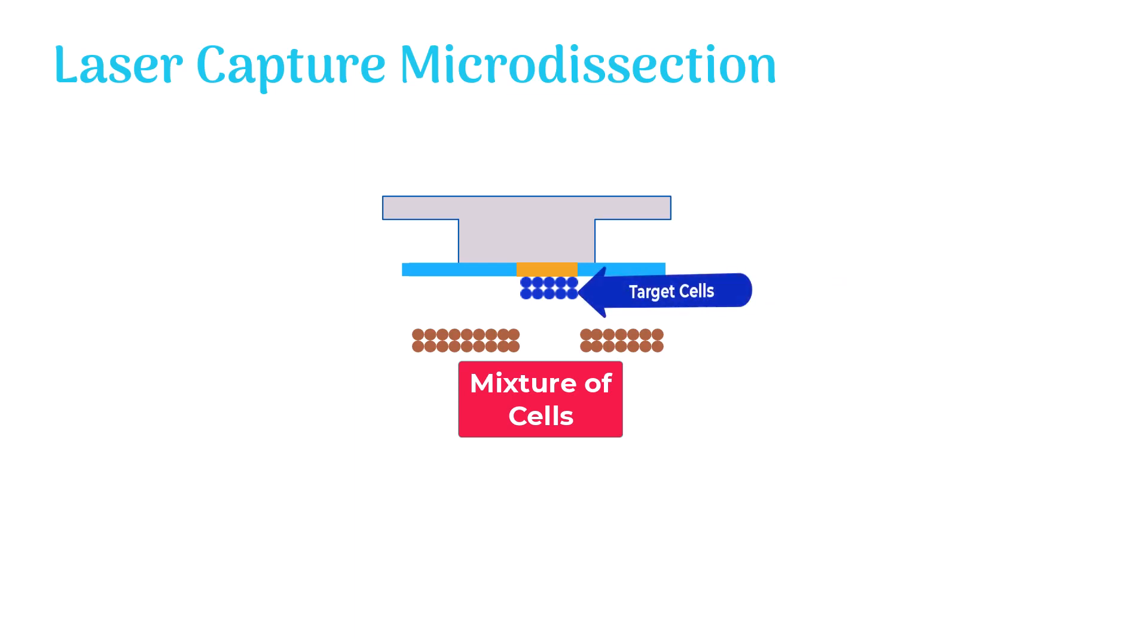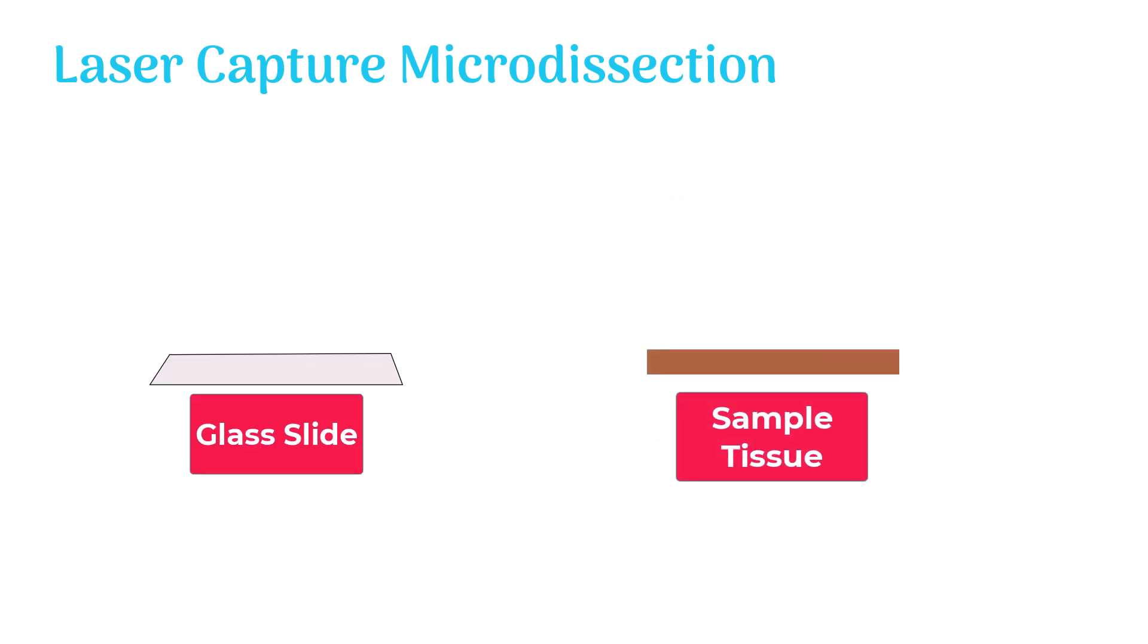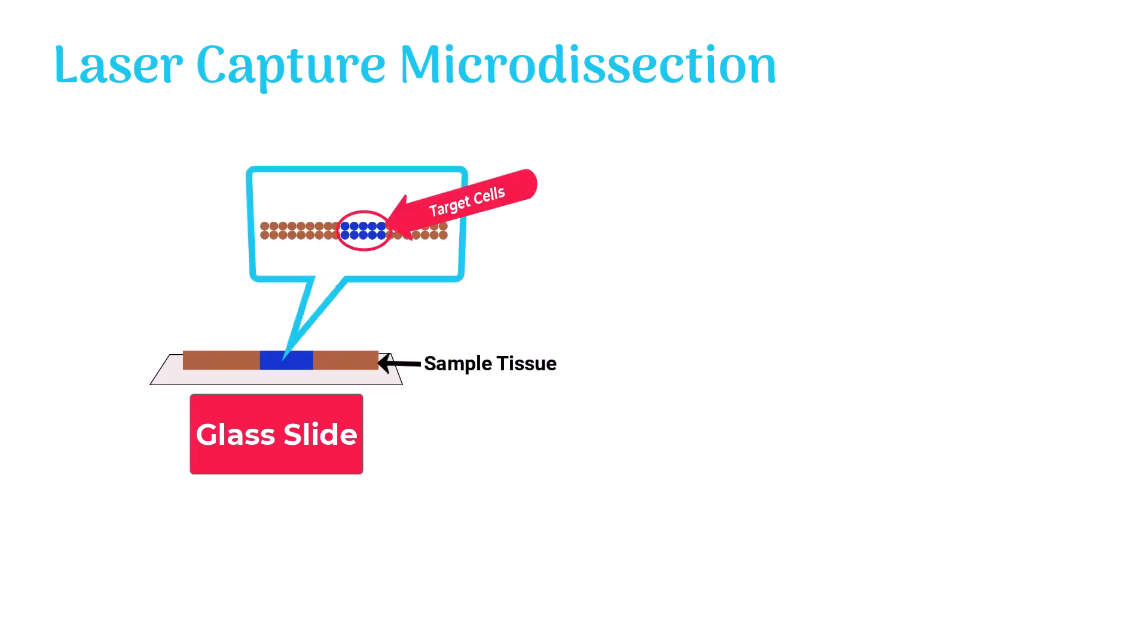The mixture usually contains many cells of different kinds. In the first step, the tissue which contains the target cells is placed on a glass slide. In the next step, the target cells are stained with special dyes.